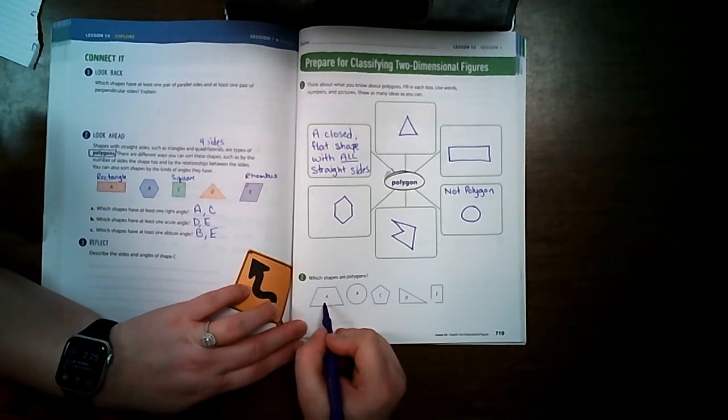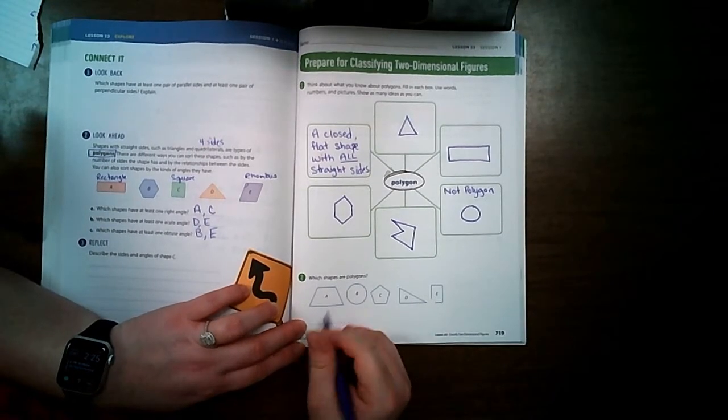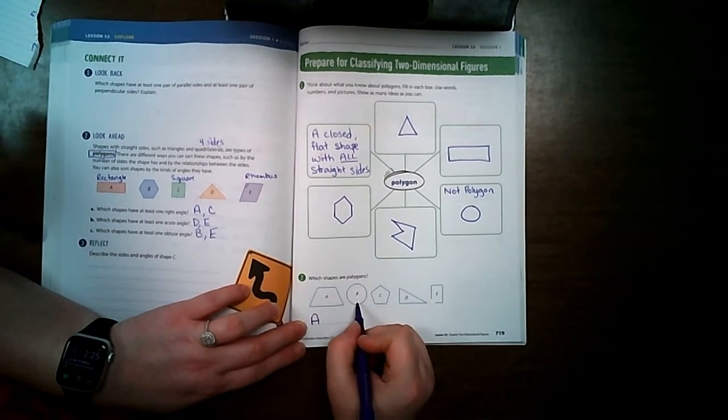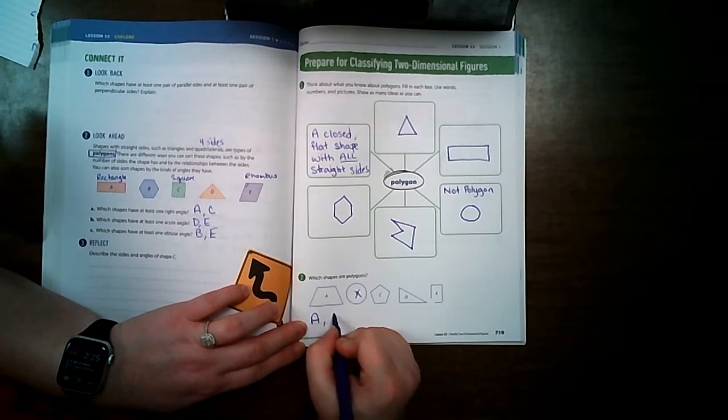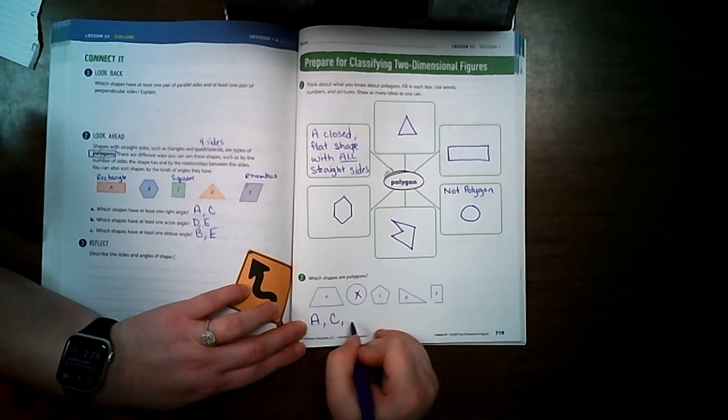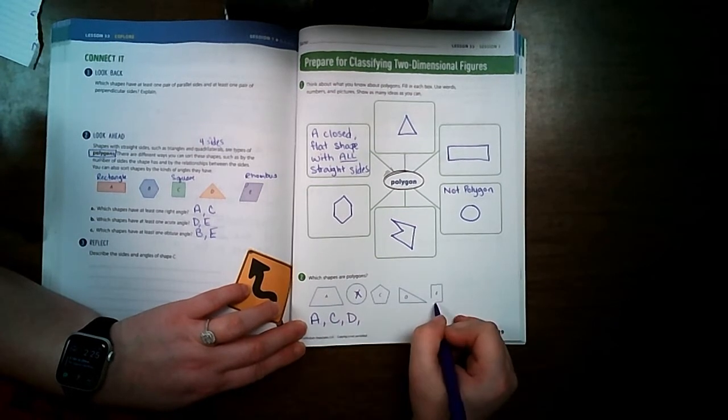Which shapes are polygons? Does this one have all straight sides? Yes. B does not have straight sides. C has all straight sides. D has all straight sides.